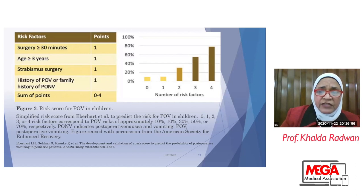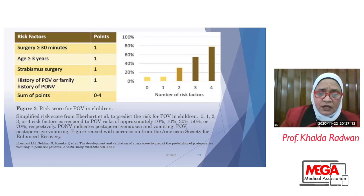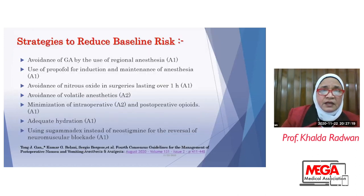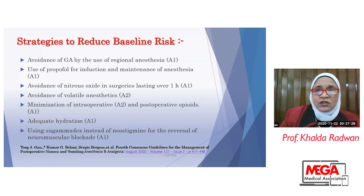With no risk factors, the incidence is about 10%. With one risk factor, also approximately 10%. With two, it is 30%. With three, it is 50%, and with four, it is 70%. We have to make strategies to decrease the baseline risk, because the more risk factors present, the higher the incidence of PONV.